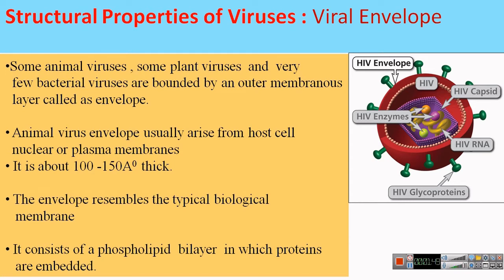In animal viruses, the envelope arises from the host cell membrane or can be derived from the nuclear membrane, depending on the site where multiplication of the virus takes place. If the virus multiplies within the cytoplasm, the envelope is generally derived from the cell membrane or plasma membrane. If the virus multiplies within the nucleus, the envelope is generally derived from the nuclear membrane. The thickness of this envelope is about 100 to 150 angstrom units.